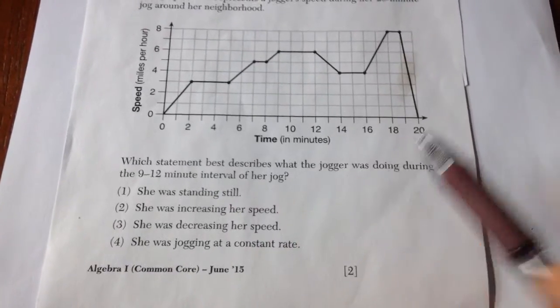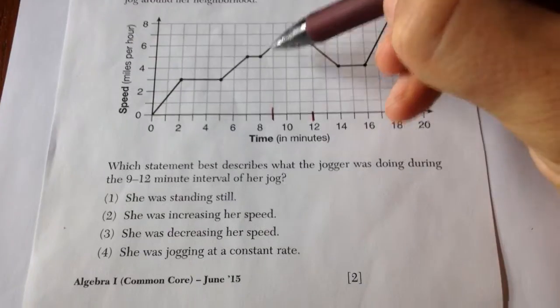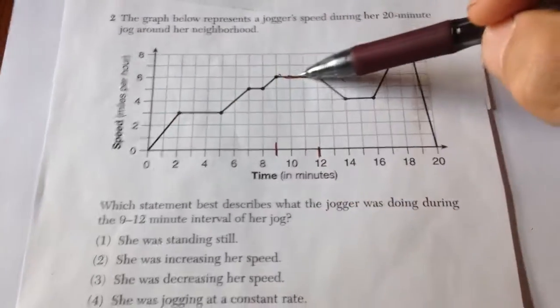Number two gives you a graph of a jogger and its speed. Which statement best describes what the jogger was doing between nine minutes and 12 minutes? If you look, it looks like this is a constant line and it's a measure of this person's jogger speed.